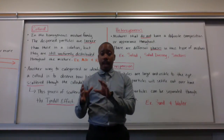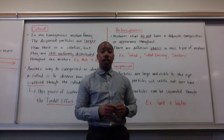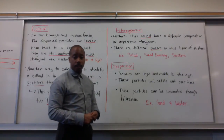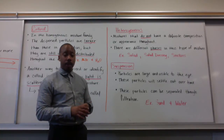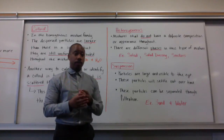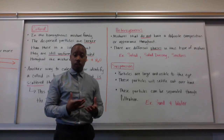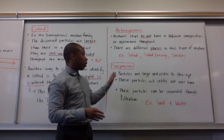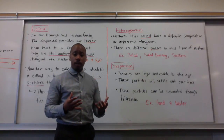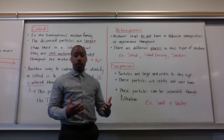Just as homogeneous mixtures had different subcategories like solutions and colloids, heterogeneous mixtures have different categories as well. One in particular is called a suspension. A suspension is a specific type of heterogeneous mixture where the particles are large and visible to the eye, they will settle out over time, and they can be separated through filtration. An example is a bucket of sand and water — you can shake it up as much as you want, but eventually those particles will settle down to the bottom. If we're talking about particle size: suspensions, or heterogeneous mixtures, have the largest particle size; then colloids; and the smallest particles are inside a solution.